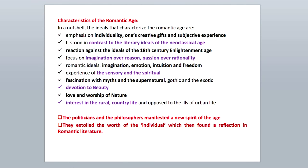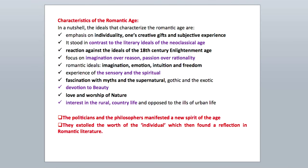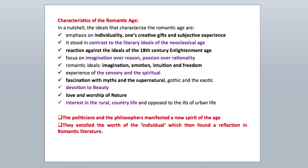You will do well to note them down. In a nutshell, the ideals that characterize the Romantic Age are the emphasis on individuality, one's creative gifts, and the subjective experience. Their way of looking at the world was very different from the rational way. It stood in contrast to the literary ideals of the neoclassical age, and as a reaction against the ideals of the 18th century Enlightenment Age. Just before it was the Enlightenment Age, where reasoning and factual knowledge were given importance, often by relegating the subjective way of looking at the world — that is, through experience, imagination, fancy, and emotions.